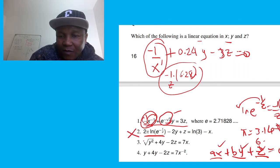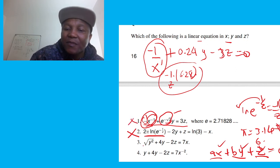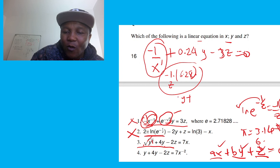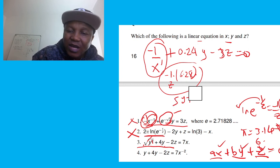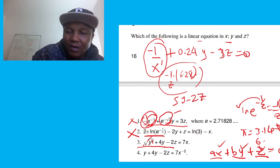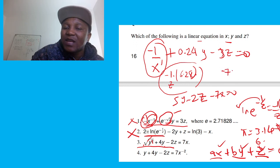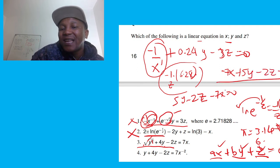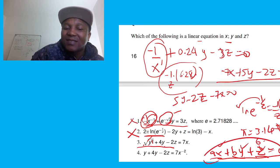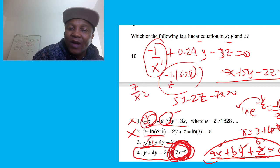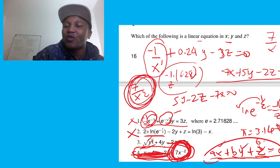The third equation is linear because sqrt(y²) = y, so y + 4y = 5y, and then −2z, and −7x after rearranging gives: −7x + 5y − 2z = 0. That's the standard linear form. The fourth equation is not linear because it contains 7/x², meaning 7 over x squared — a variable in the denominator disqualifies it.